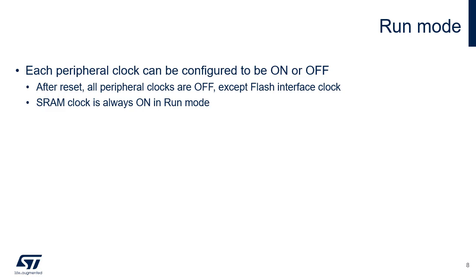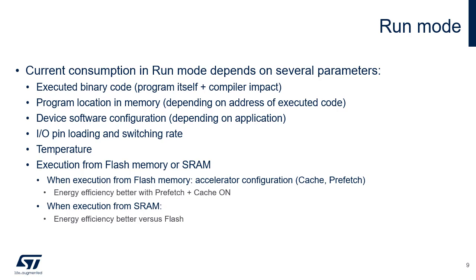The SRAM clocks are always on in run mode. By default, the device is in run mode after system or power reset. The current consumption in run mode depends on several parameters: the executed binary code, which means the program itself plus the compiler impact, the program location in memory, the device software configuration, the IO pin loading and switching rate, the temperature, and the memory from which instructions are fetched — flash or SRAM. When code is executed from flash, energy efficiency is better when the flash accelerator is enabled because the instruction cache and prefetch buffer are based on SRAM memory.